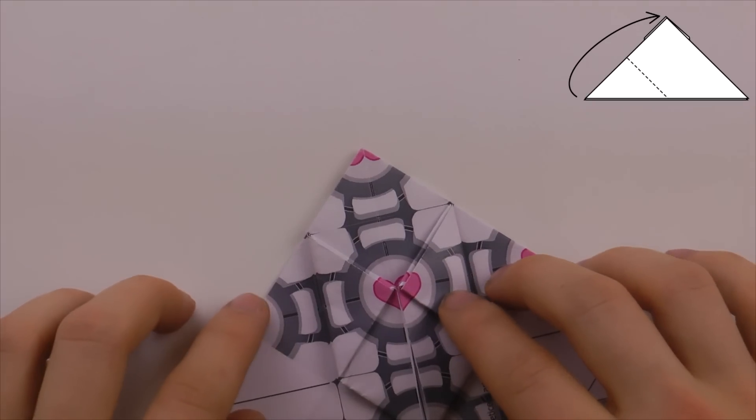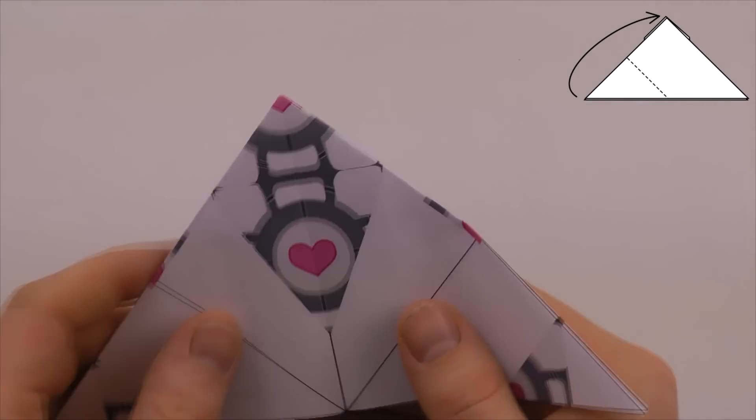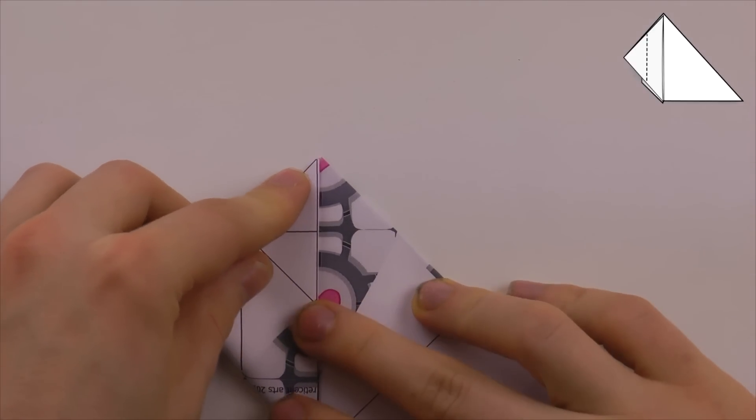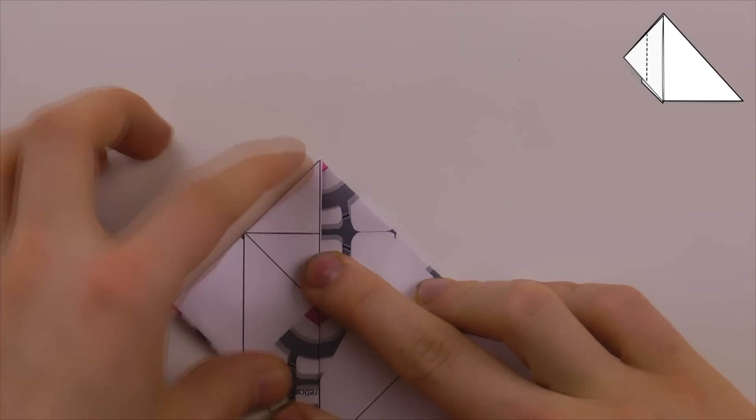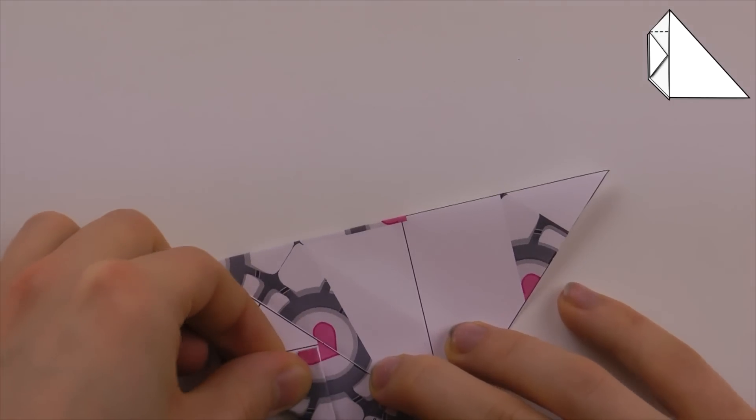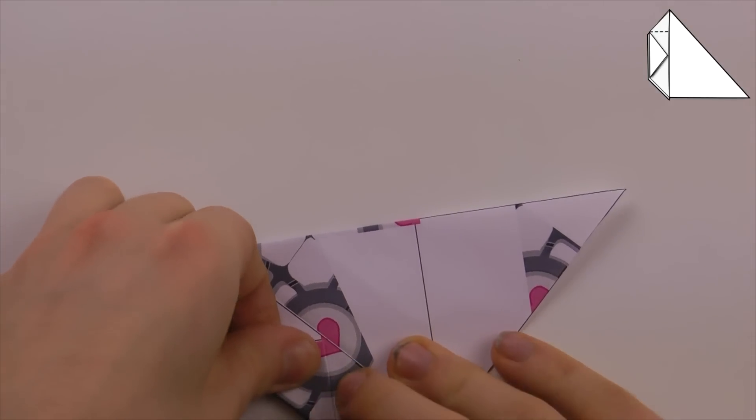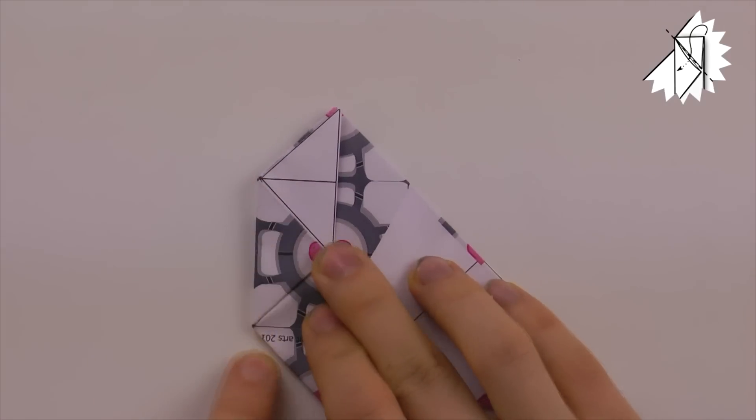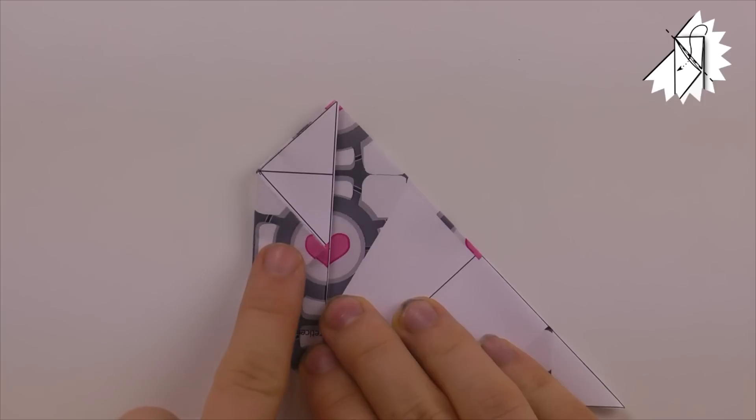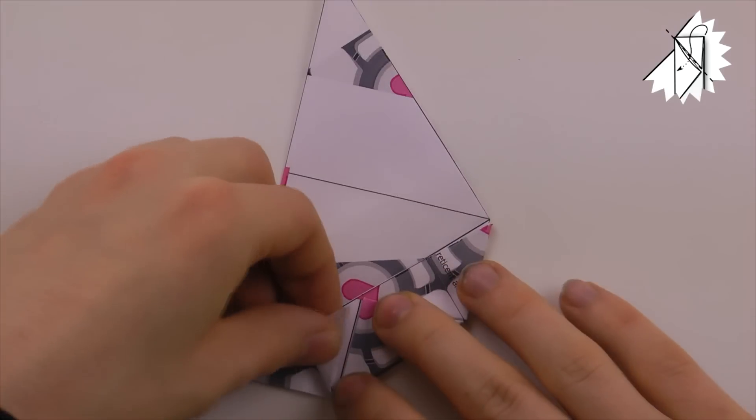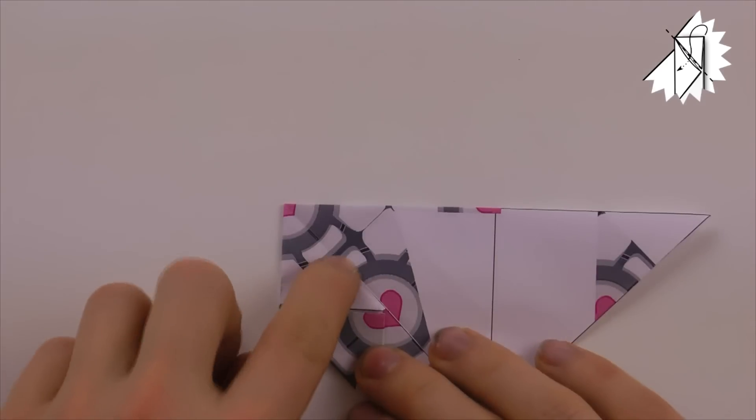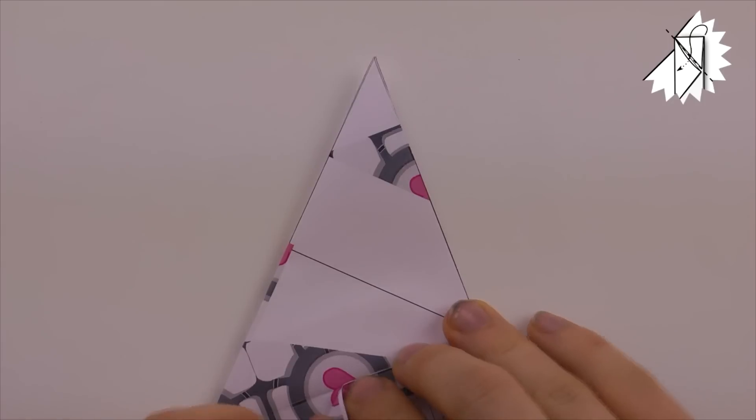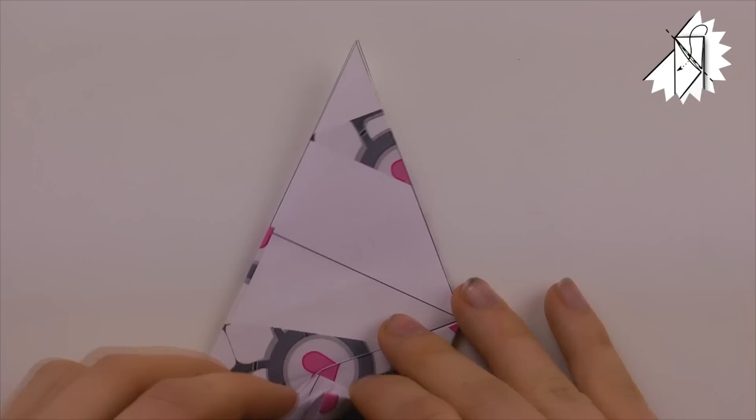Okay, turn the model over and repeat with the third flap. There we go. Well done, the corner. Fold in half the flap, fold in half the flap. Open the pocket and tuck it in.